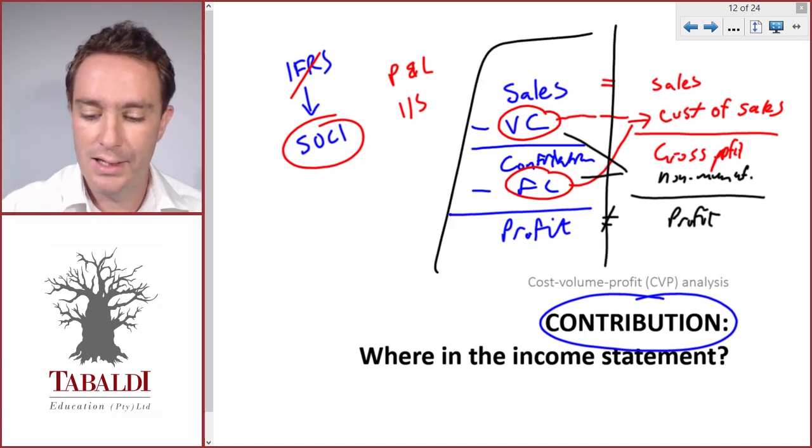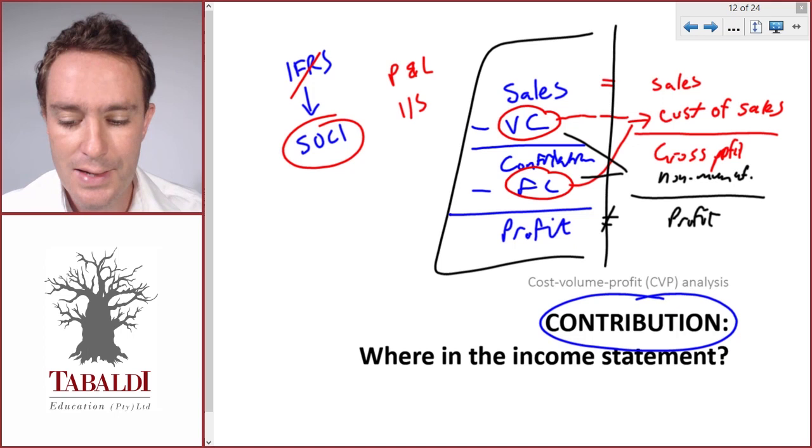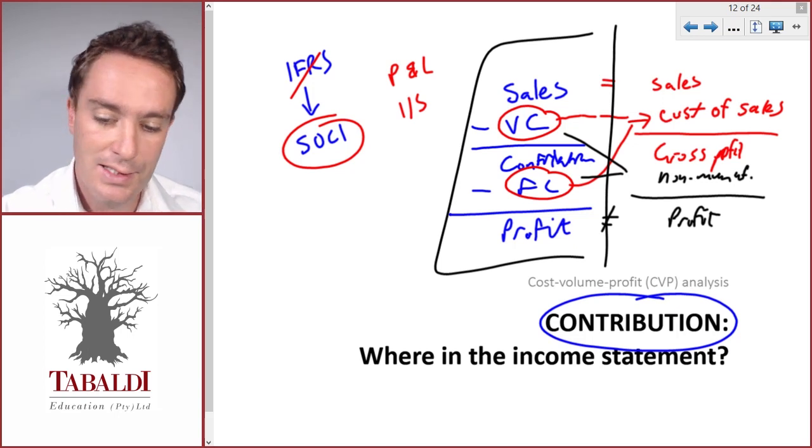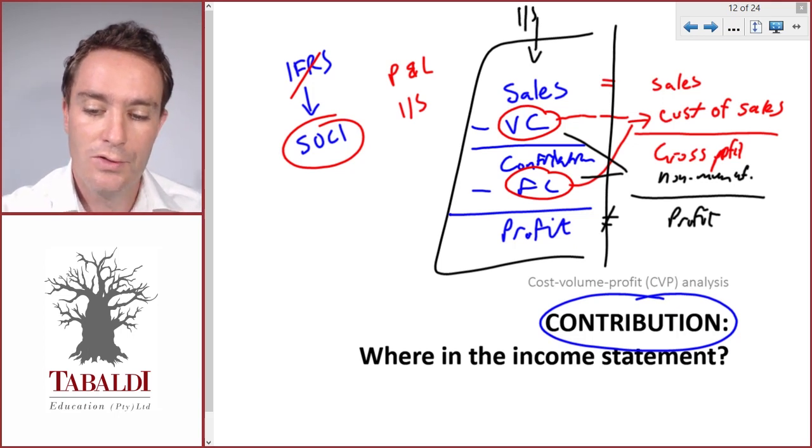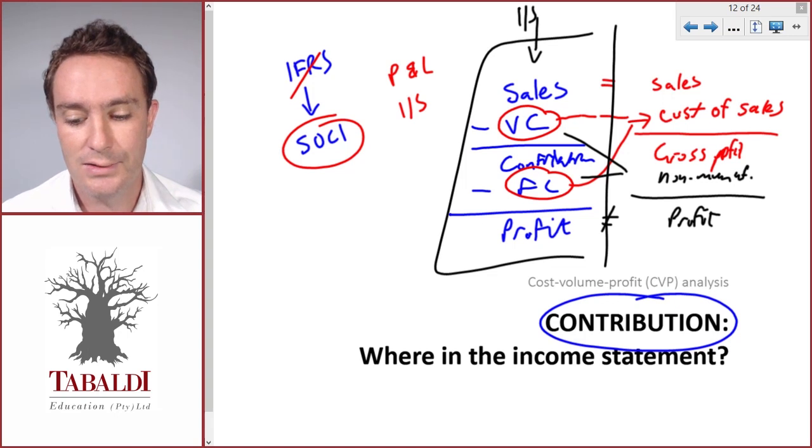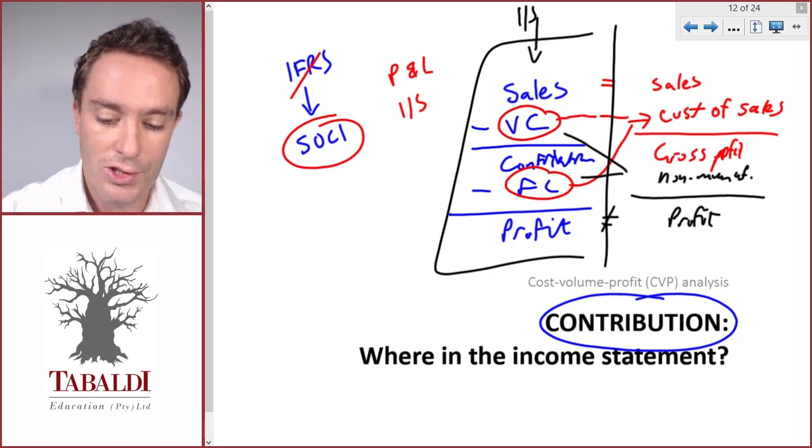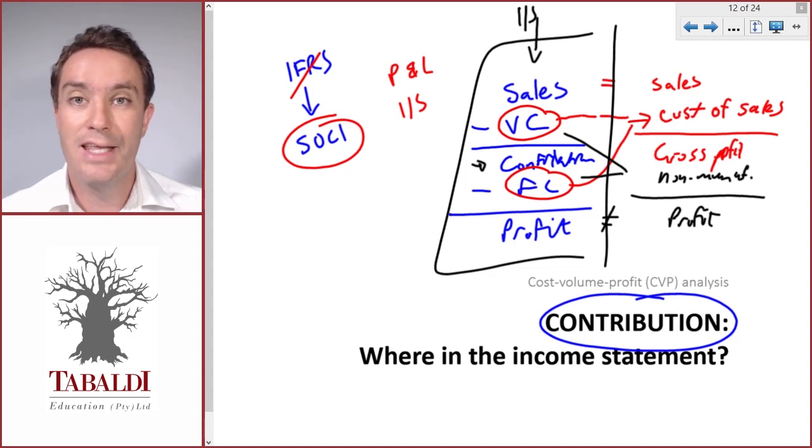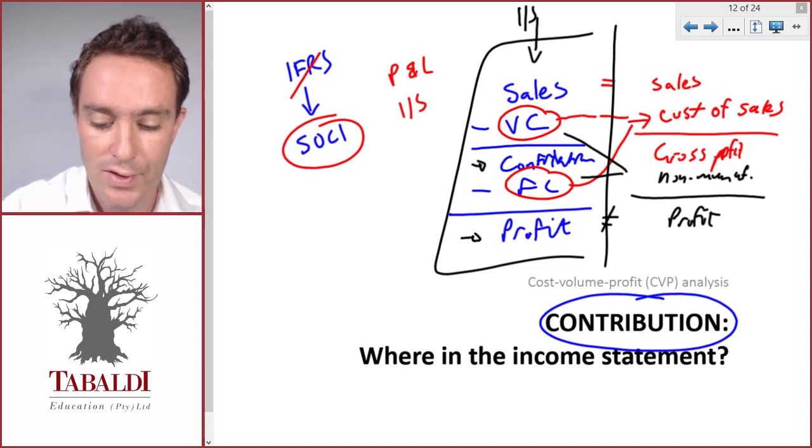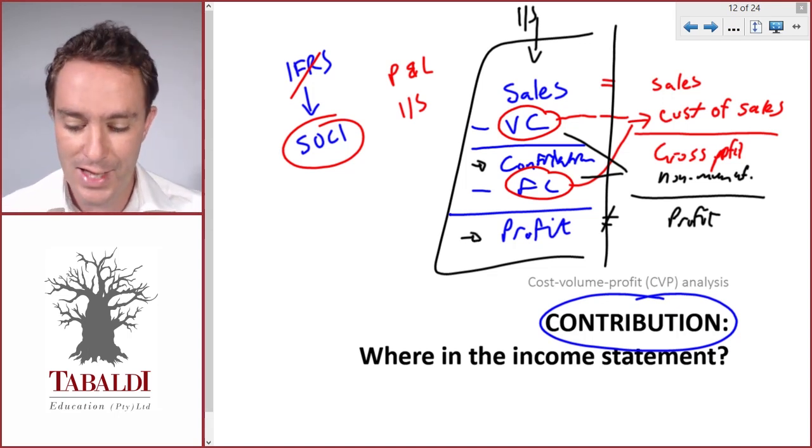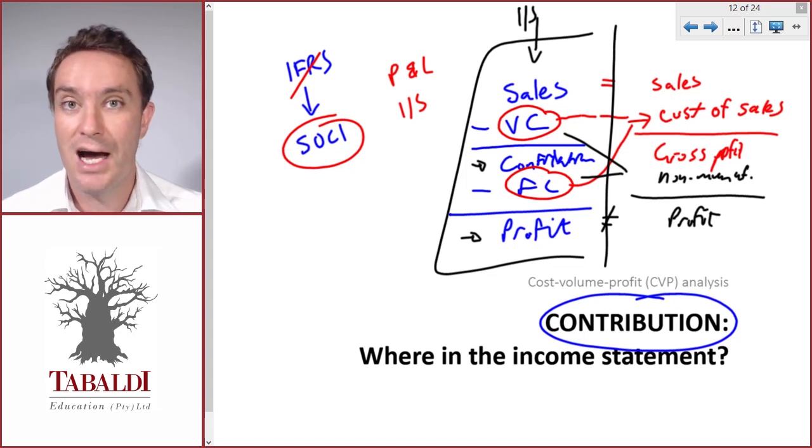For our purposes, we can assume it's the same. This is the income statement that we will use for cost-volume-profit analysis. Sales, and then we'll classify the costs whether they're variable or fixed. If we take Sales minus Variable Costs, we'll get this useful number Contribution, and then we'll deduct Fixed Costs to get to our final Profit. That's where we find contribution in our income statement.